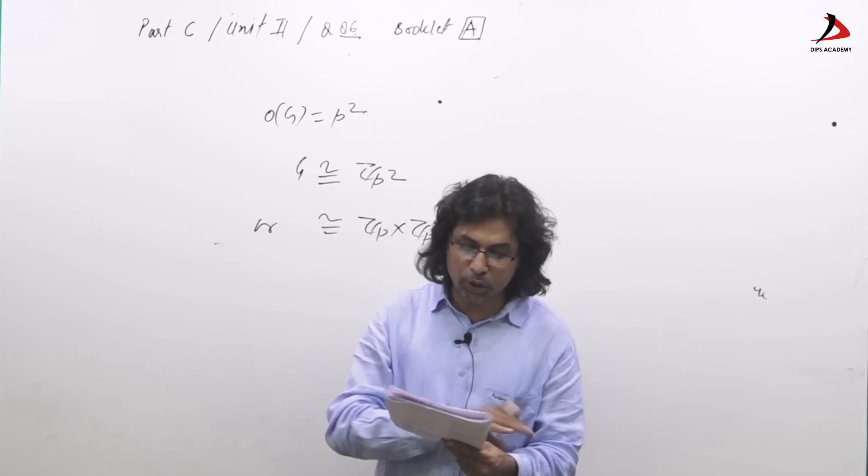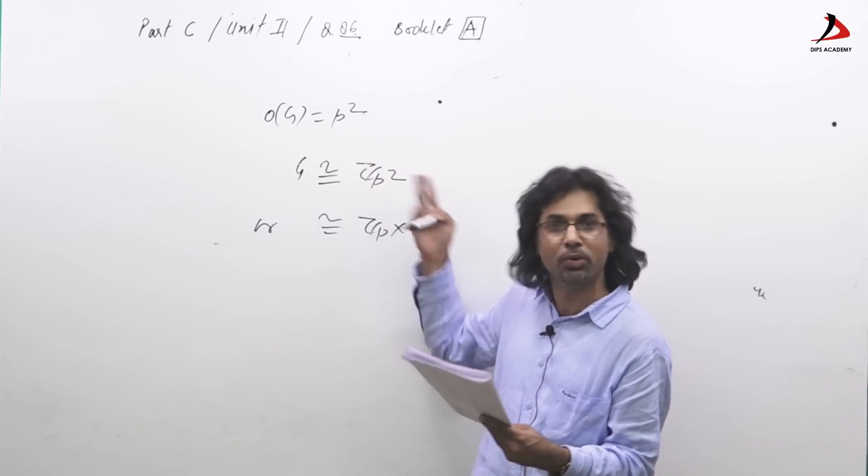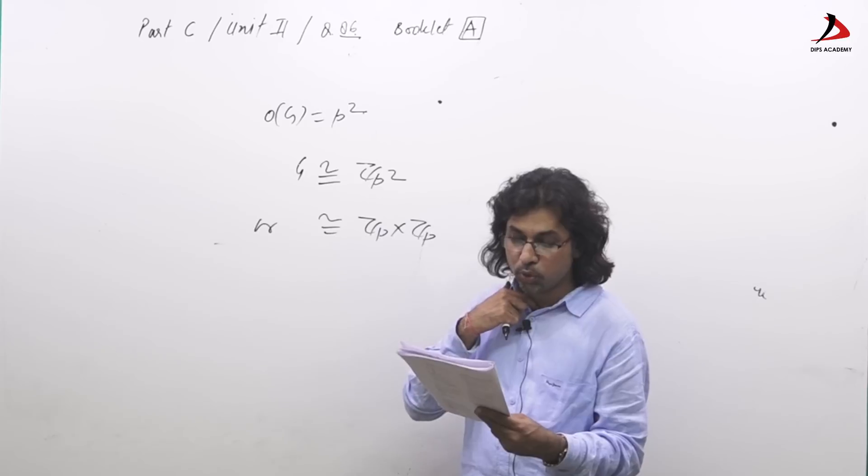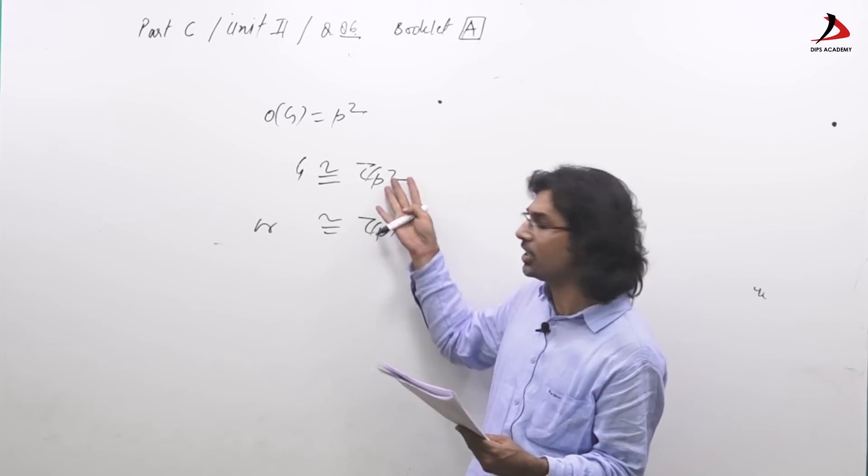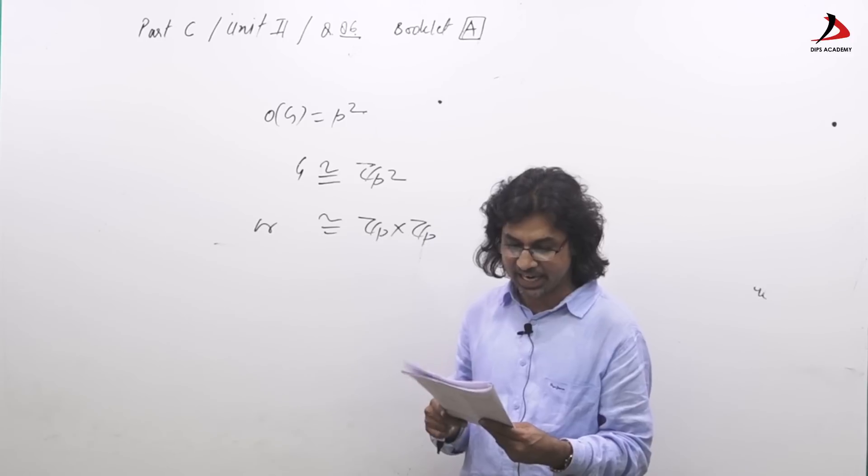I read out: there are exactly two abelian groups of order P square. There are only two groups. There are exactly two groups of order P square, of course both are abelian. There are only two and both are abelian, so first and second are correct.